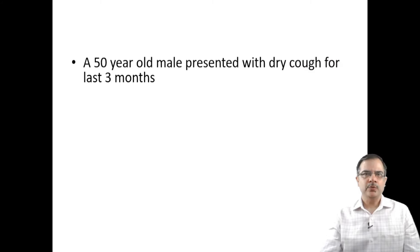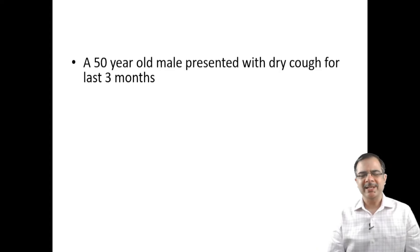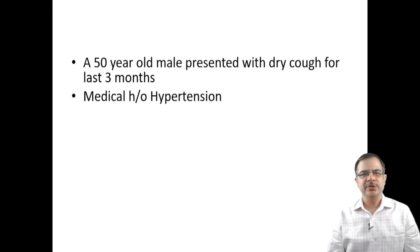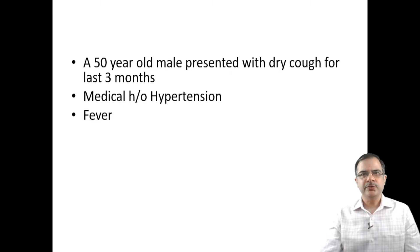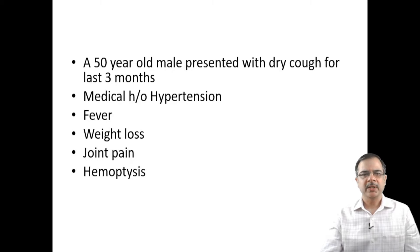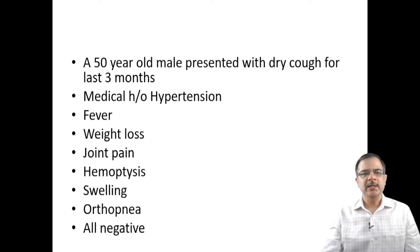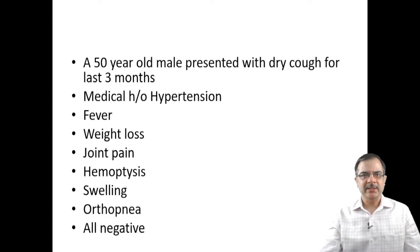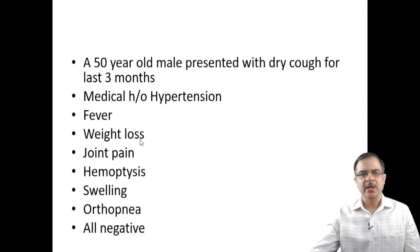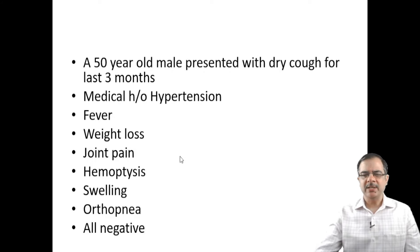Coming back to our patient: a 50-year-old male with dry cough for three months and a history of hypertension. We asked about fever, weight loss, joint pains, hemoptysis, swelling, and orthopnea — all were negative. There was nothing suggestive of any inflammatory or infectious cause; fever, joint pains, and weight loss were all absent.